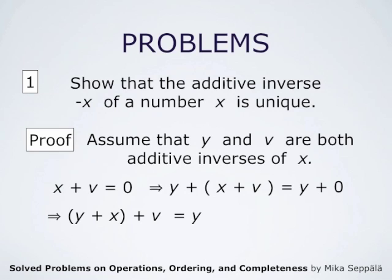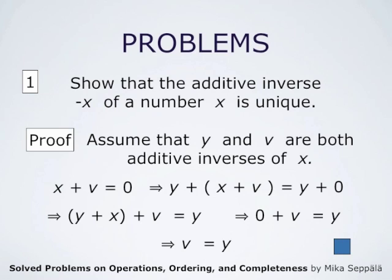y plus x is zero because y is an additive inverse of x. Therefore, we get zero plus v equals y. Now, zero plus v is simply v. And therefore we conclude that v equals y. This means that the additive inverse of the number x is unique.